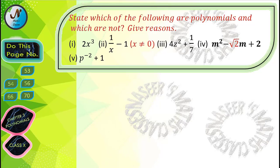Now we are going to solve Do This page number 52, Chapter 3 Polynomials. It is given that state which of the following are polynomials and which are not, give reasons. Here total 5 bits are given. We have to check whether these are polynomials or not.